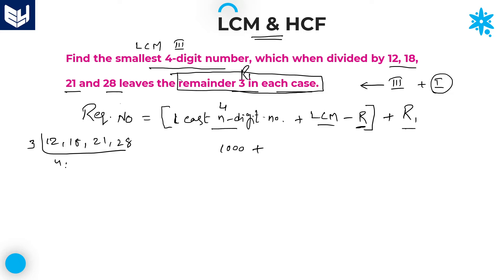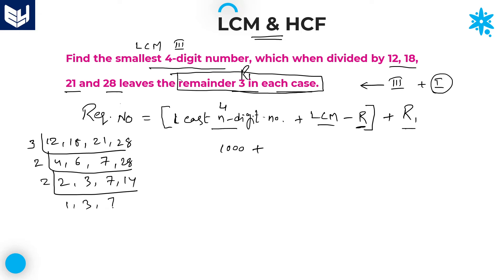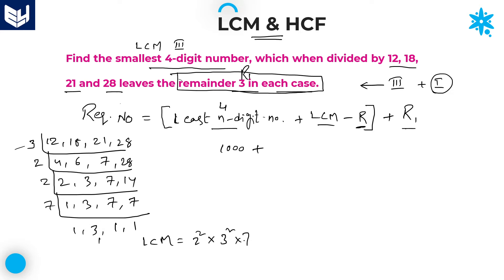Dividing by 3: we get 4, 6, 7, and 28 is not divisible by 3. Then divide by 2: giving 2, 3, 7, 14. Divide by 2 again: 1, 3, 7, 7. Then divide by 7: 1, 3, 1, 1. So LCM equals 2² × 3² × 7. That is 4 × 9 × 7 = 36 × 7 = 252.